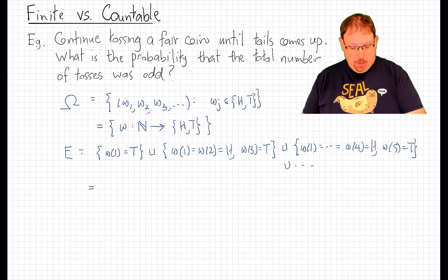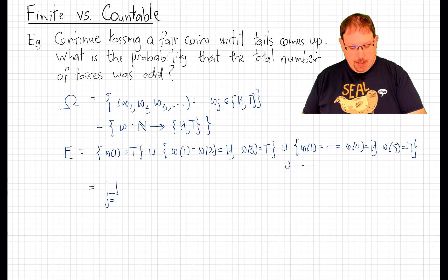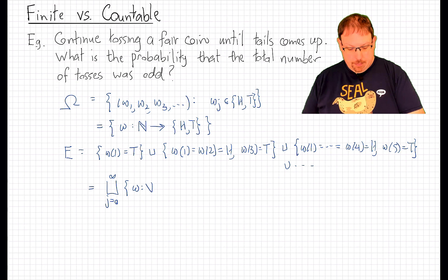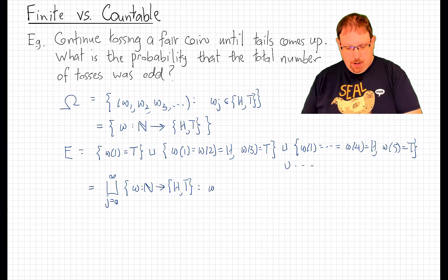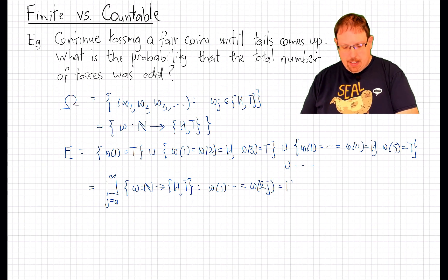We could write it more succinctly like this. Each of these can be described as the set of sequences omega, where the first 2j tosses are heads,